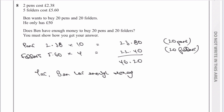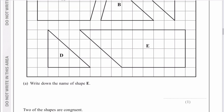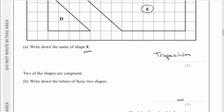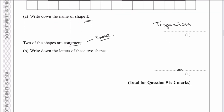Question nine: the diagram shows five shapes. Write down the name of shape E — which is a trapezium, though it's drawn upside down to the way we would normally see it. Then it says two of the shapes are congruent. Congruent means they are exactly the same — it's just a maths word for when something is the same. Looking at our diagram, it's actually shape C and shape D that are exactly the same as each other. One is just upside down relative to the other, so the answer is C and D.